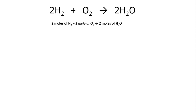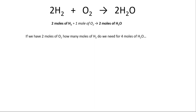Make sure you get this. Don't think it's saying that two grams of hydrogen gas are reacting with one gram of oxygen to produce two grams of water — that's not what it's telling us. As an example, if we had two moles of oxygen gas, we'd need four moles of hydrogen gas to produce four moles of water. You basically just follow the ratio laid out in the chemical equation.